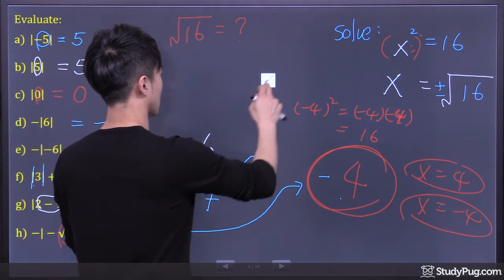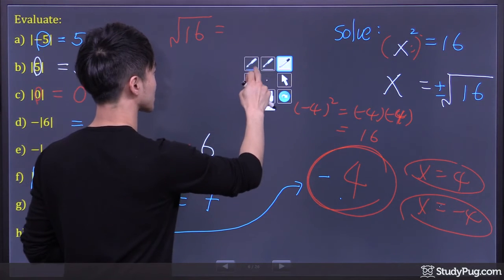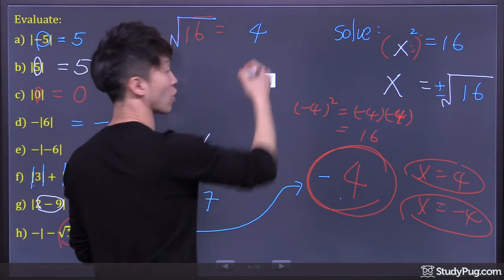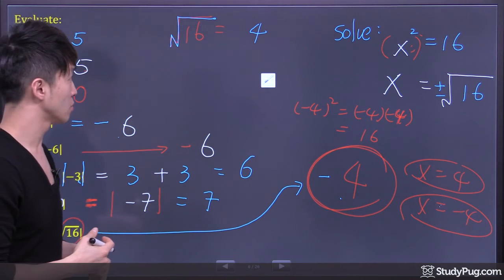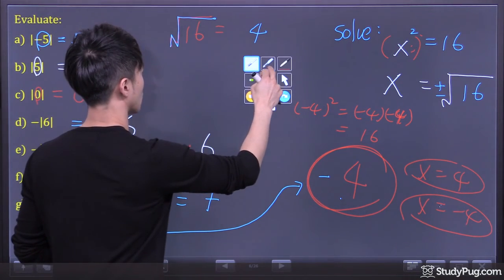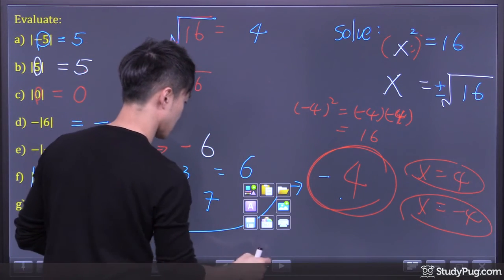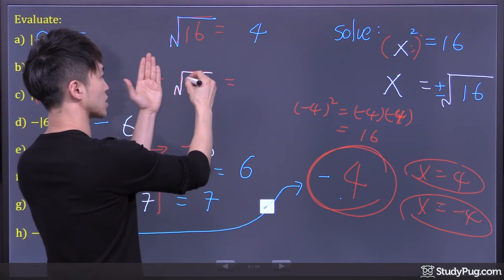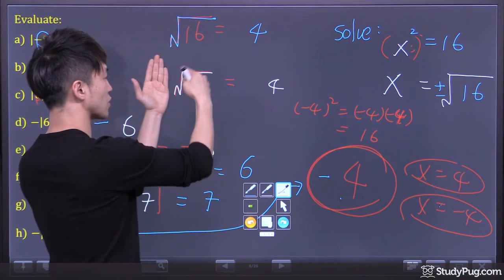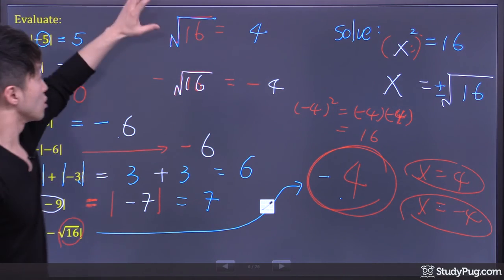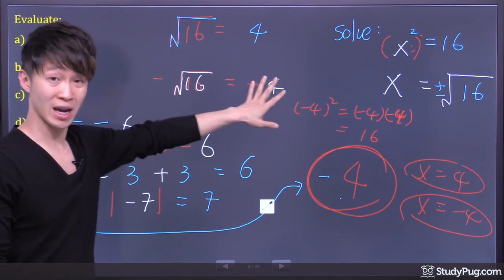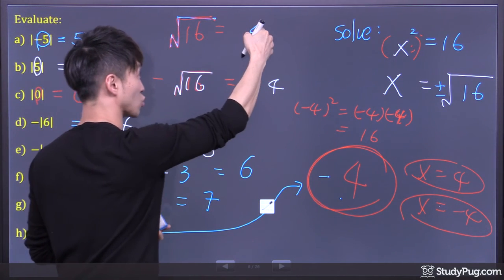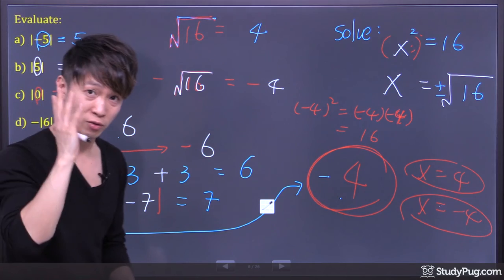This case is different though. If the question simply asks you to evaluate square root of 16, that's just 4. What's negative square root of 16? Well, square root of 16 is 4, but in front of the square root we have a negative sign — so that's negative 4. If you just see square root of 16, that's positive 4. Don't get mixed up between these two cases.